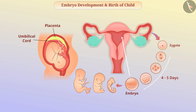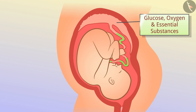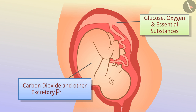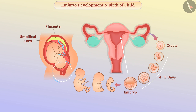With the help of the umbilical cord, the placenta supplies glucose, oxygen, and essential substances to the fetus. Similarly, it removes carbon dioxide and other excretory products produced by the fetus. In about 9 months after pregnancy, the fetus is fully developed and ready for delivery. During delivery, there is rhythmic contraction of the uterine muscles that leads to the birth of an infant.